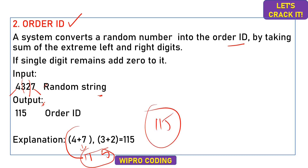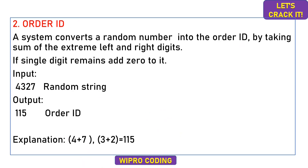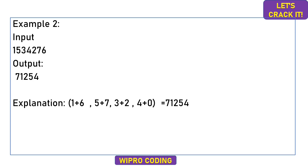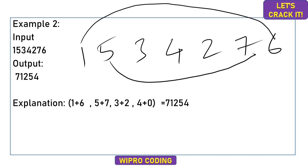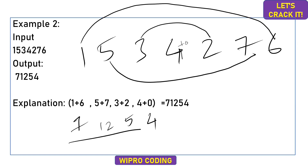For sample input 2, the input is 1534276. Extreme left and right are 1 and 6, sum is 7. Next pair: 5 and 7, sum is 12. Then 3 and 2, sum is 5. A single digit 4 remains, so we add 0 to get 4. The final output by concatenating these sums is 71254. If a single digit remains, always add zero to it.